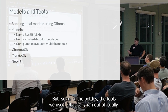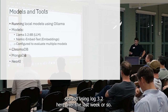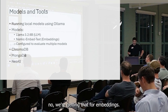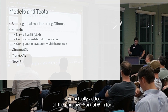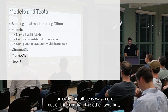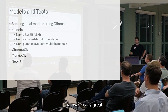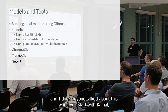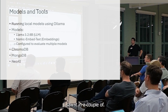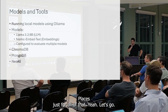Some of the models and tools we used: we basically ran everything locally. We started using Llama 3.2 over the last week or so, Nomic Embed for the embeddings. He actually added ChromaDB, MongoDB, and Neo4j. ChromaDB is obviously way more out of the box than the other two. Why did you start with ChromaDB? I saw it in a couple places and just rolled with it.